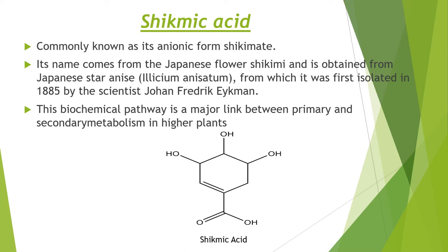Shikimic acid, commonly known as its anionic form shikimate. Its name comes from the Japanese flower shikimi and is obtained from Japanese star anise (Illicium anisatum), from which it was first isolated in 1885 by the scientist John Frederick Eykman.